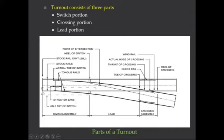The stock rail and tongue rail together form what is called a point or offset of switch. The two stock rails and two tongue rails together form a switch, up to the heel of switch.